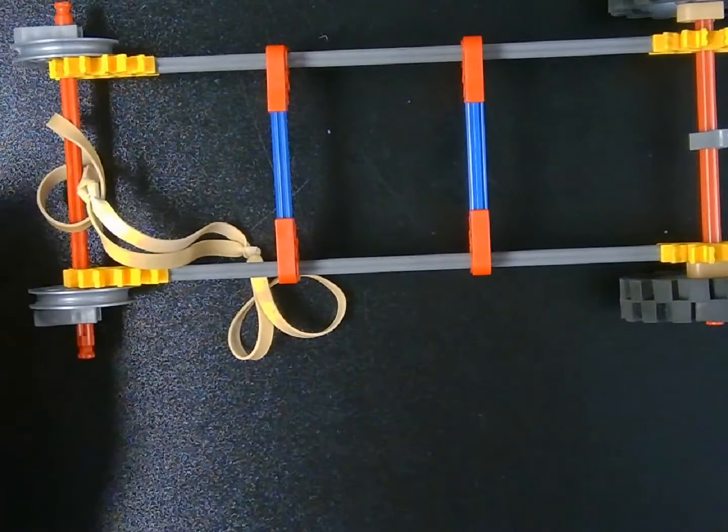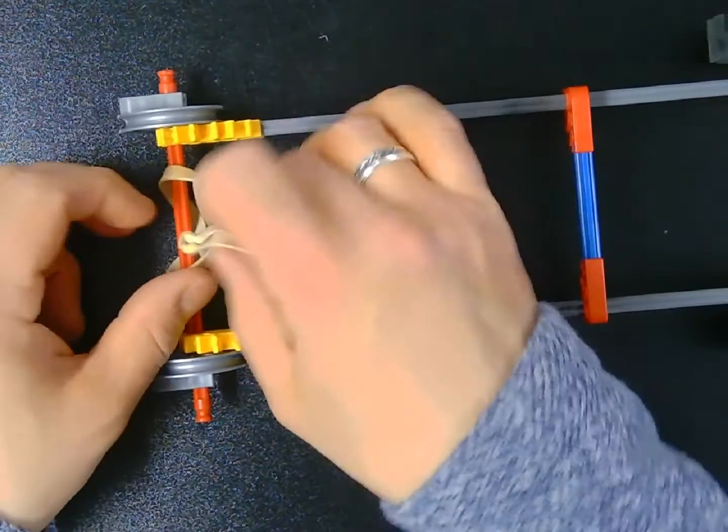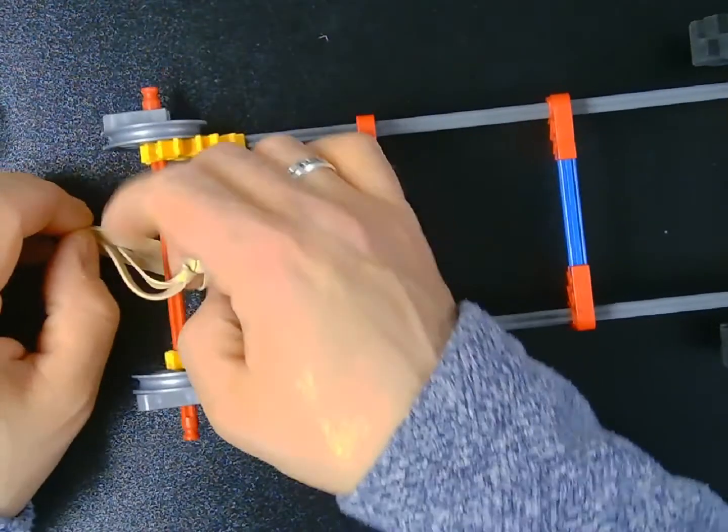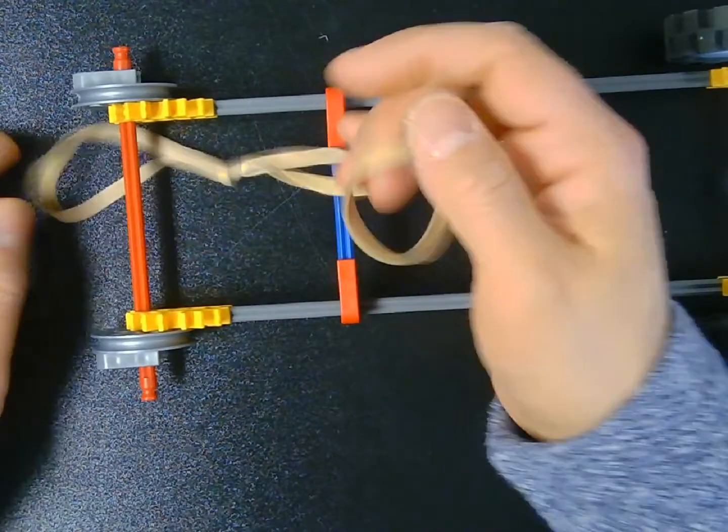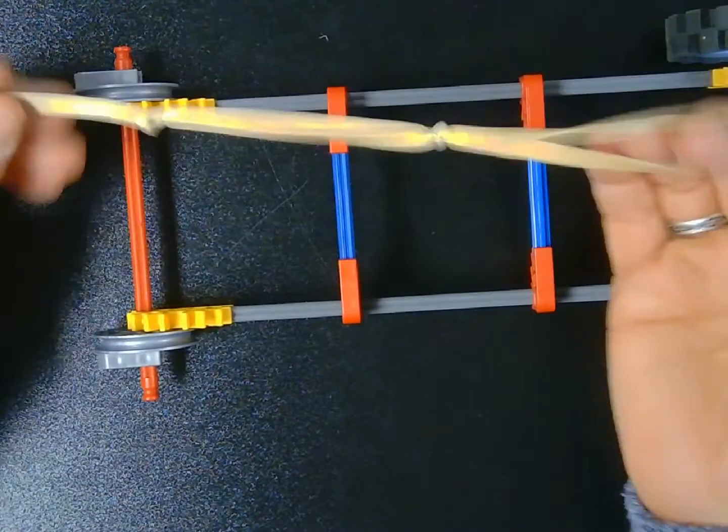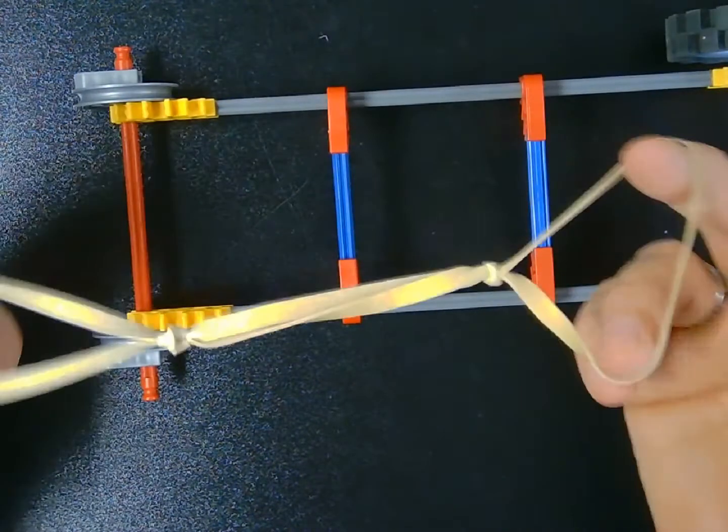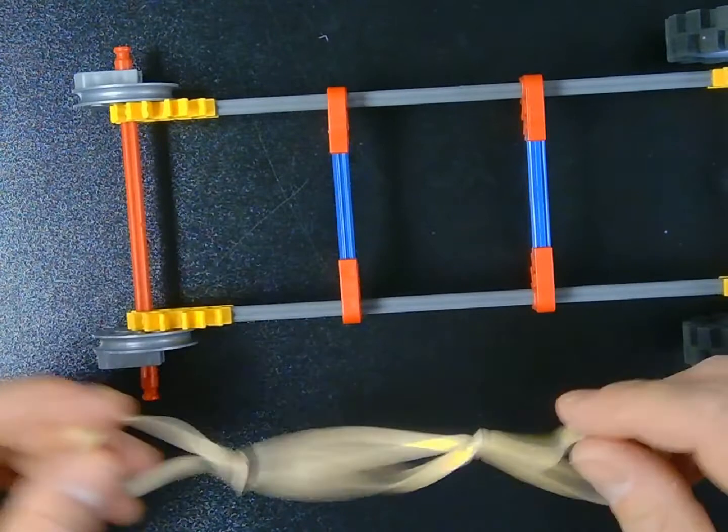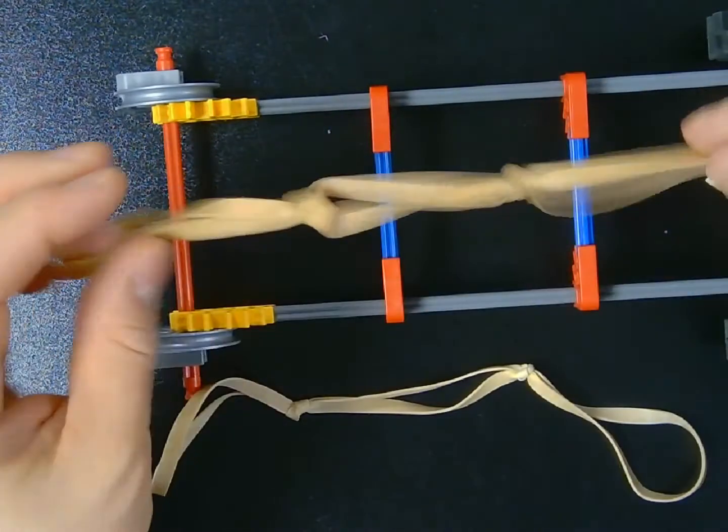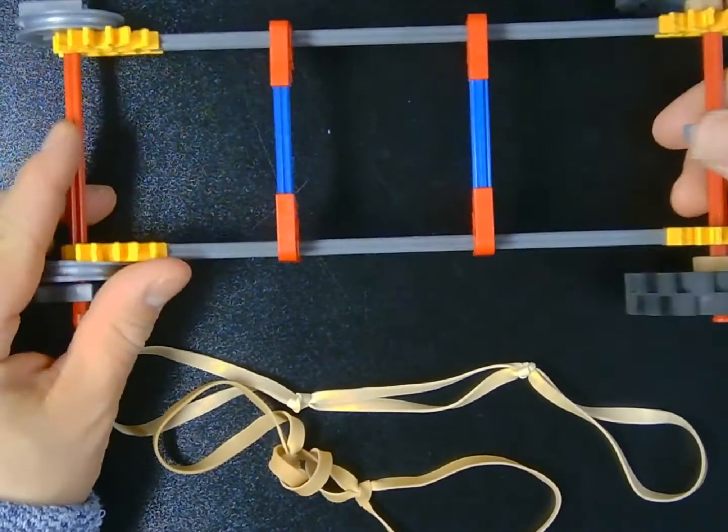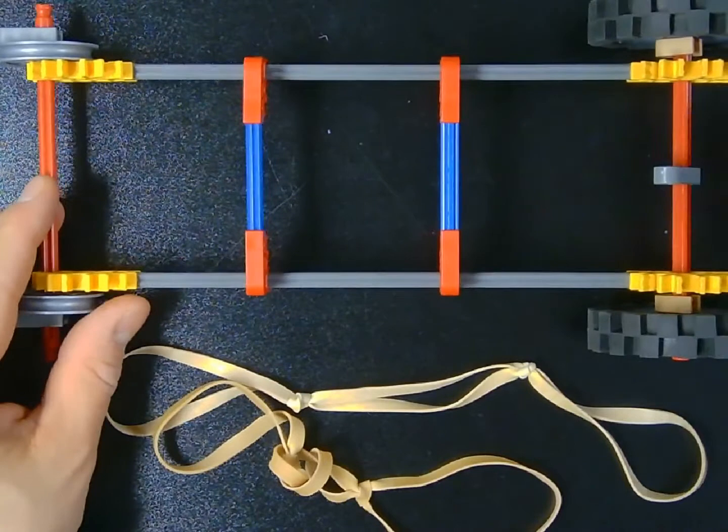So that is the basis of our experiment today. We are going to test potential and kinetic energy by using a rubber band engine. I hope this video helps you with the connecting of the rubber band, the building of the rubber band engine, and the execution of spinning it around the axle.